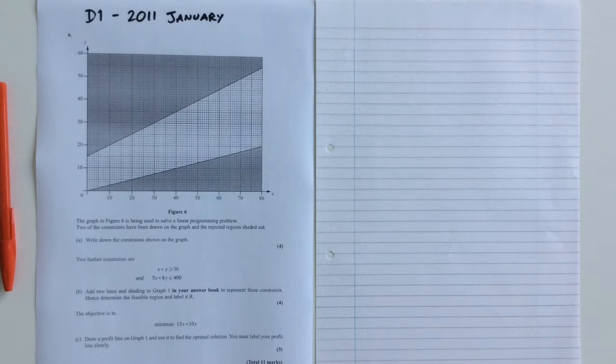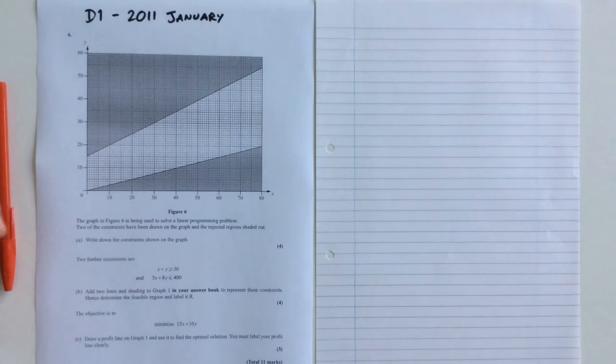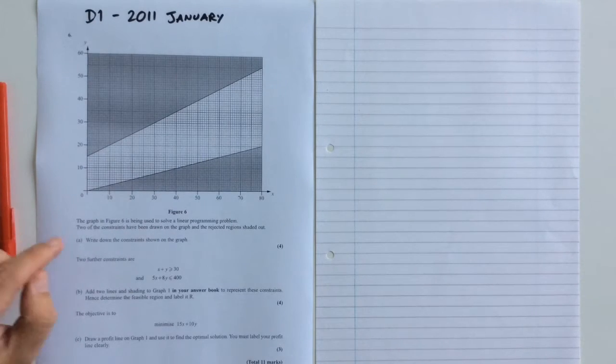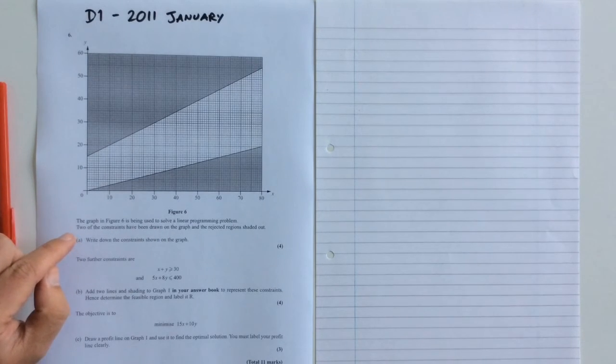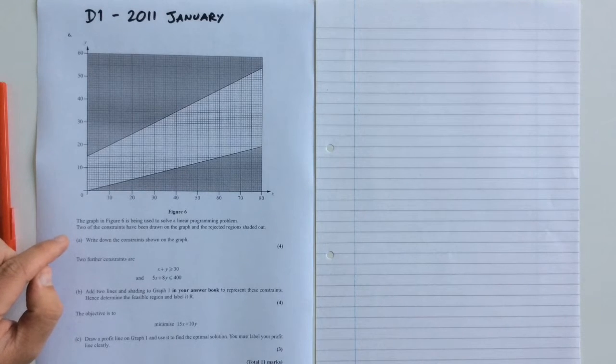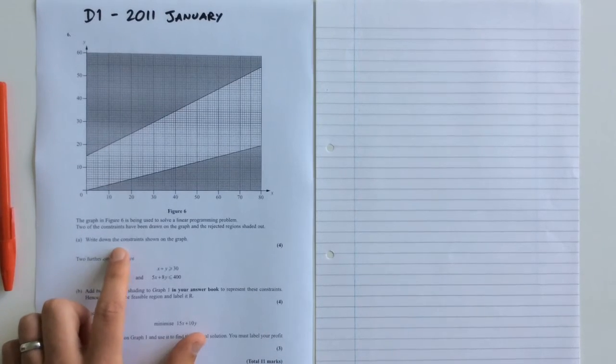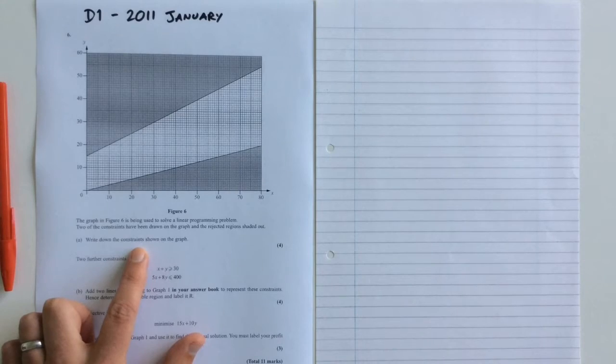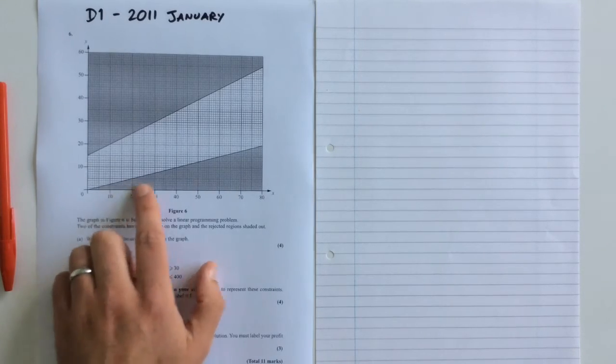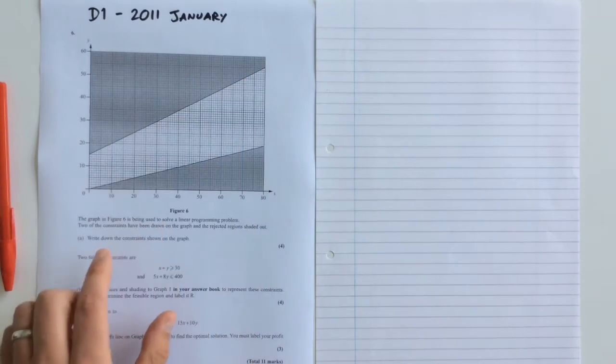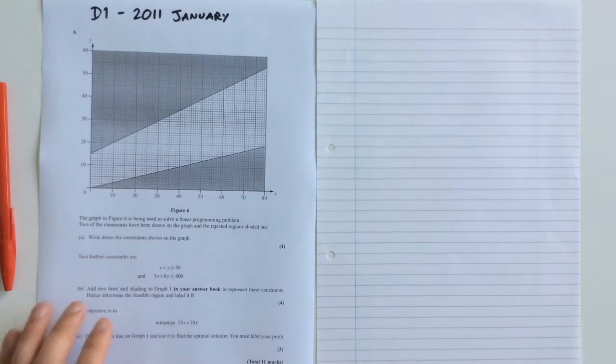This is another video on how to do a linear programming problem. Here we've got a question from the D1 paper from Edexcel 2011 January. What we've got is a graph showing various constraints on it. We're told that the graph is being used to solve a linear programming problem and two of the constraints have been drawn with the rejected regions shaded out. Write down the constraints shown on the graph. So what we've got to do is find the equations of these two lines and then state whether we want the stuff above or below each of them.